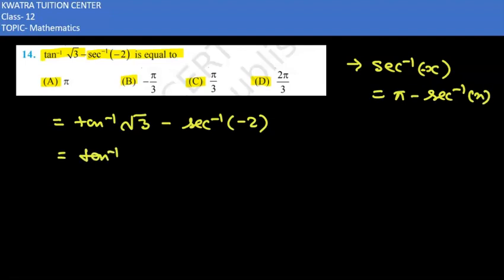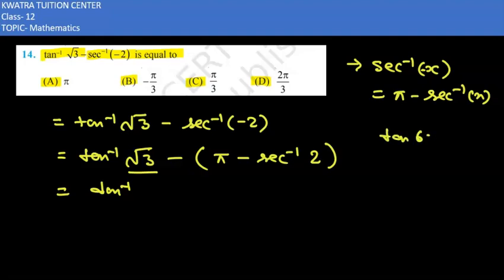Now this will be tan inverse square root 3 minus pi minus sec inverse 2. We have taken the negative sign forward and then our value for tan inverse. We know square root 3, tan 60 degree is equal to square root 3.